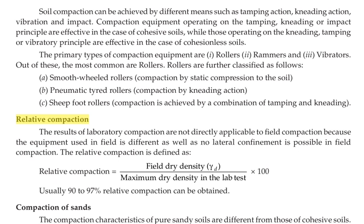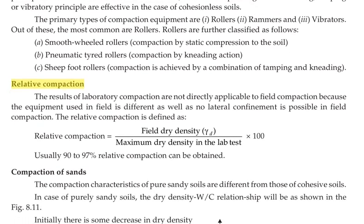The primary types of compaction equipment are rollers, rammers, and vibrators, of which rollers are the most common. Rollers are further classified into three types: smooth-wheeled rollers, which compact by static compression; pneumatic-tired rollers, which compact by kneading action; and sheep-foot rollers, where compaction is achieved by a combination of tamping and kneading.